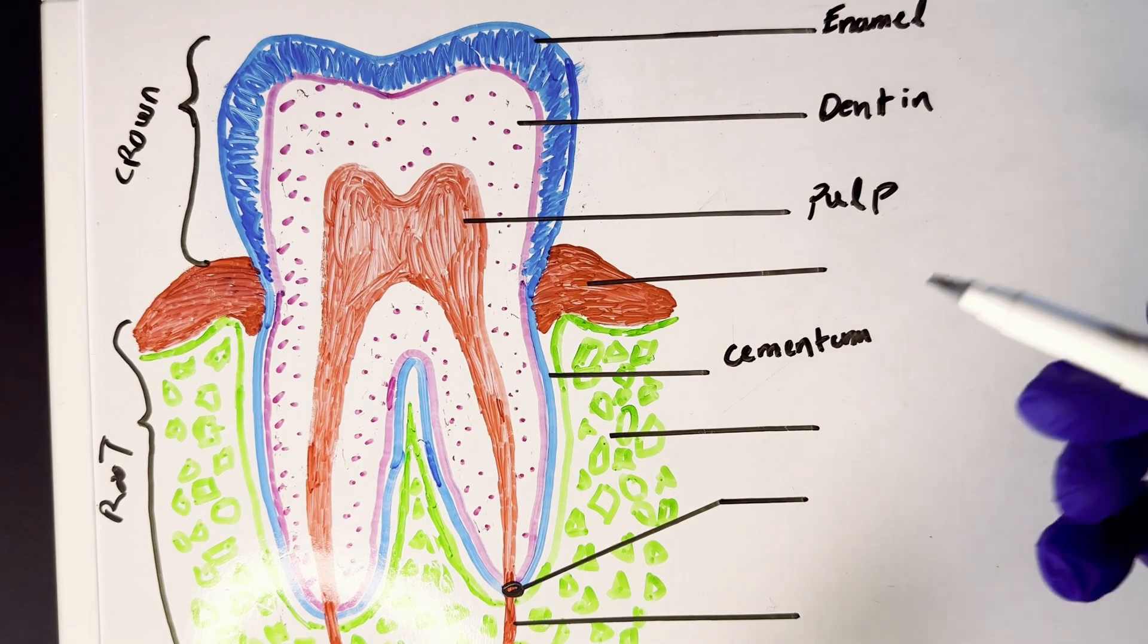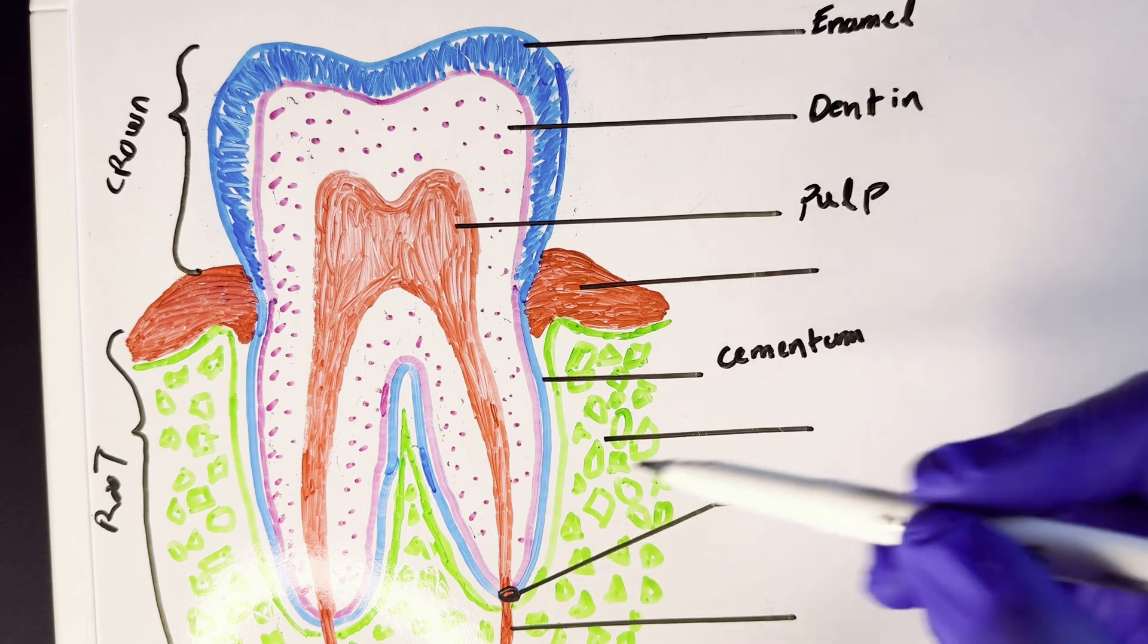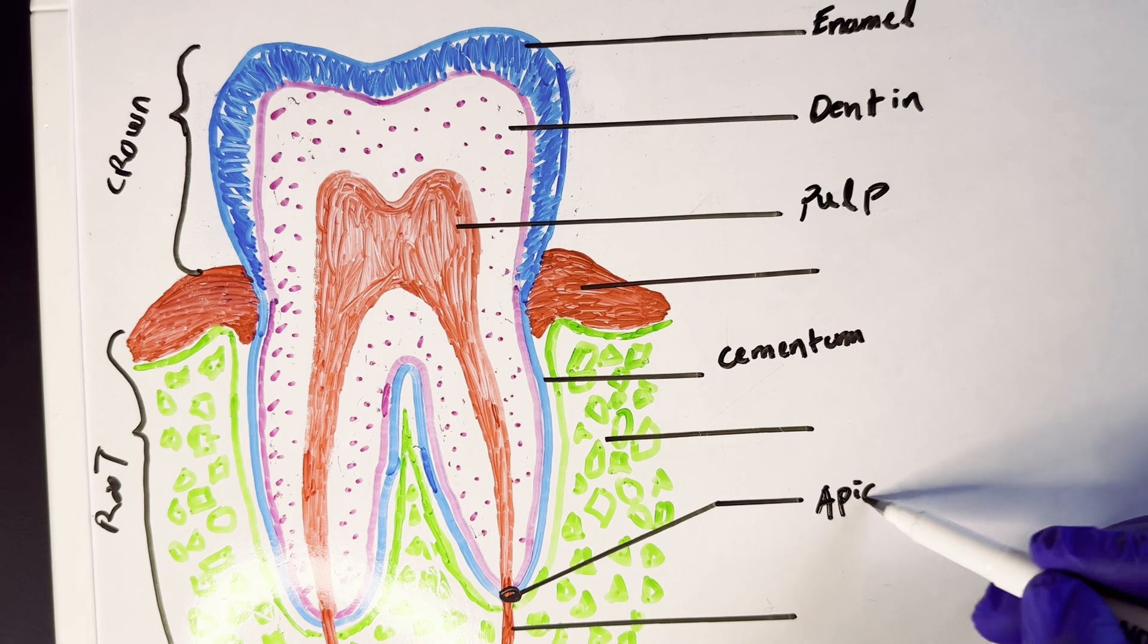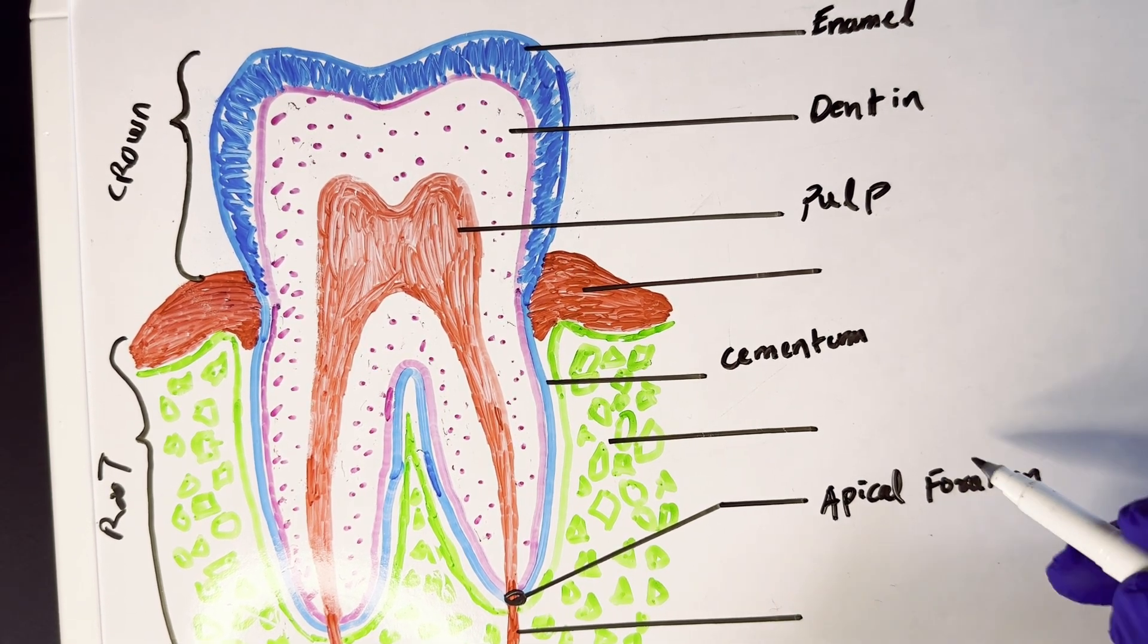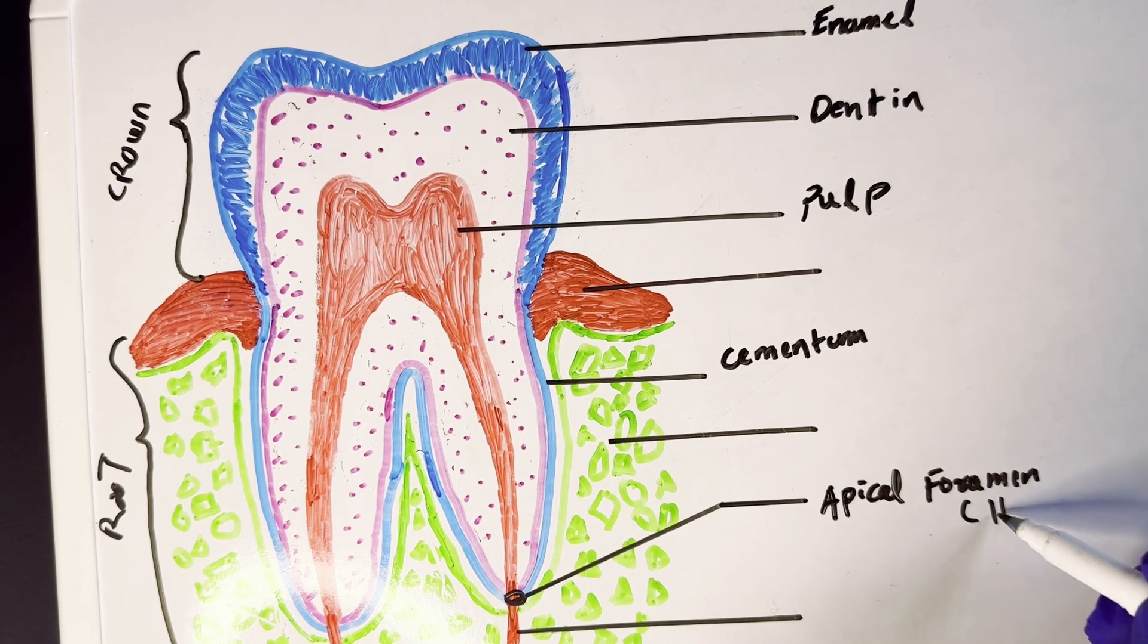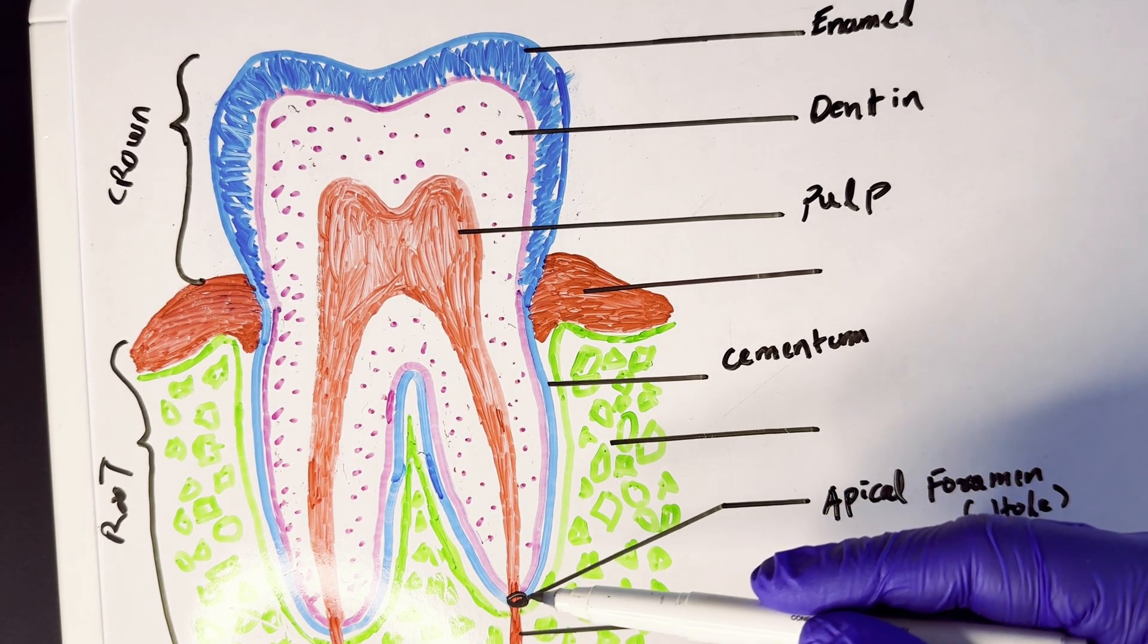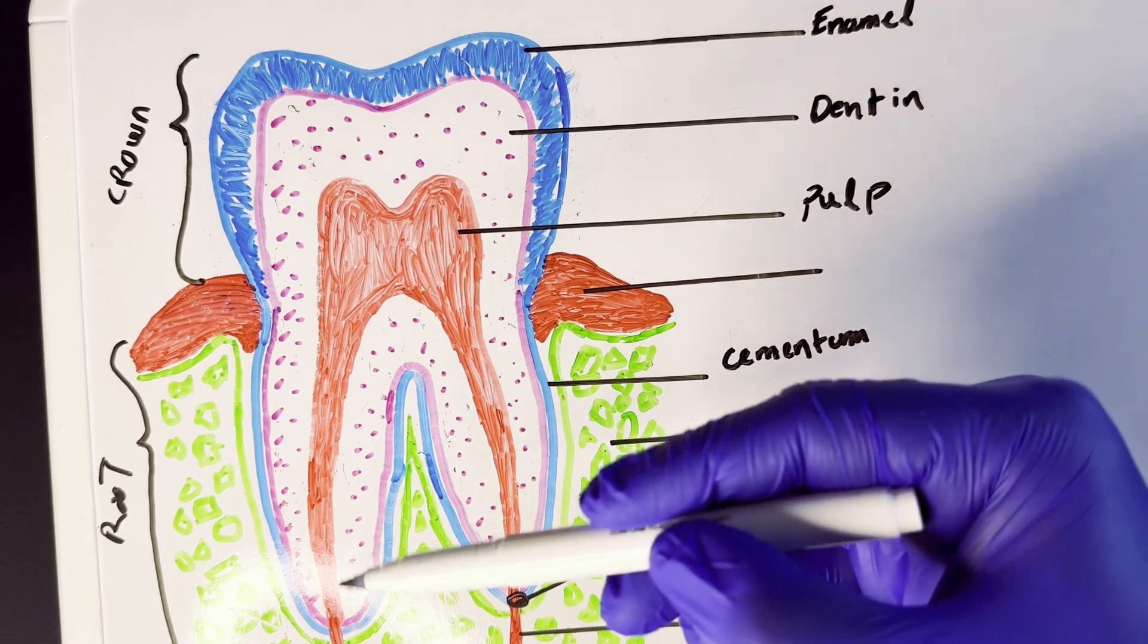Now this round structure that I've marked here right at the apex of the tooth root is called the apical foramen. I'm going to label it here: apical foramen. And foramen literally just means a small hole. It's literally just a small hole within the apex of the tooth root that allows the entry and exit of blood vessels and nerves.